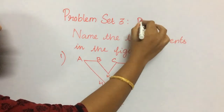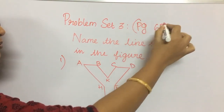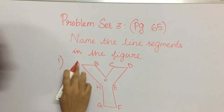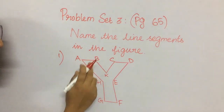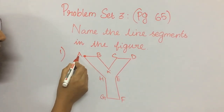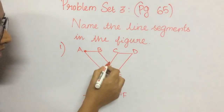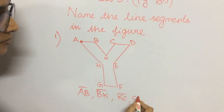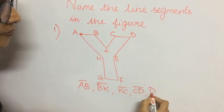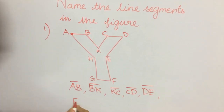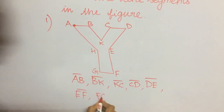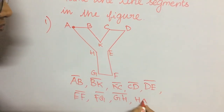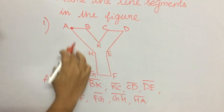Problem set 3 on page 65. Name the line segments in the figure. The figure is a closed figure. The line segments are: AB, BK, KC, CD, DE, EF, FG, GH, and HK. These are the line segments in the given figure.